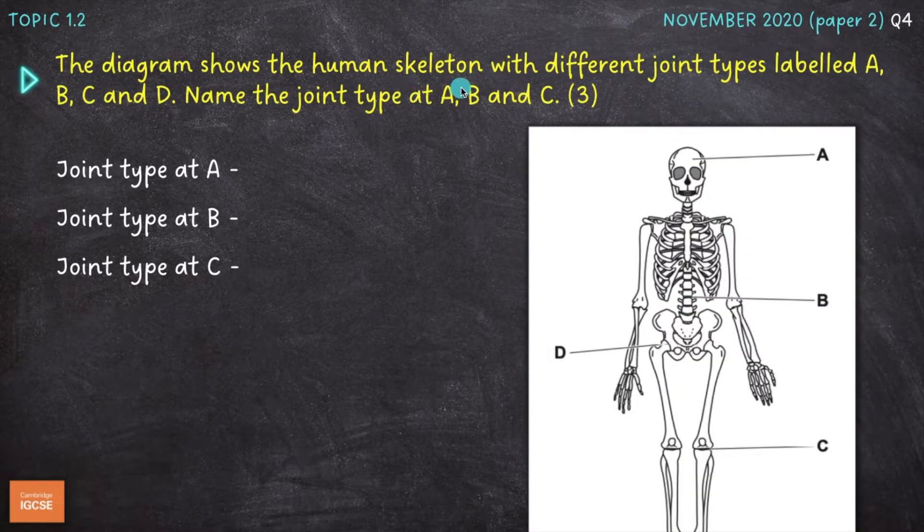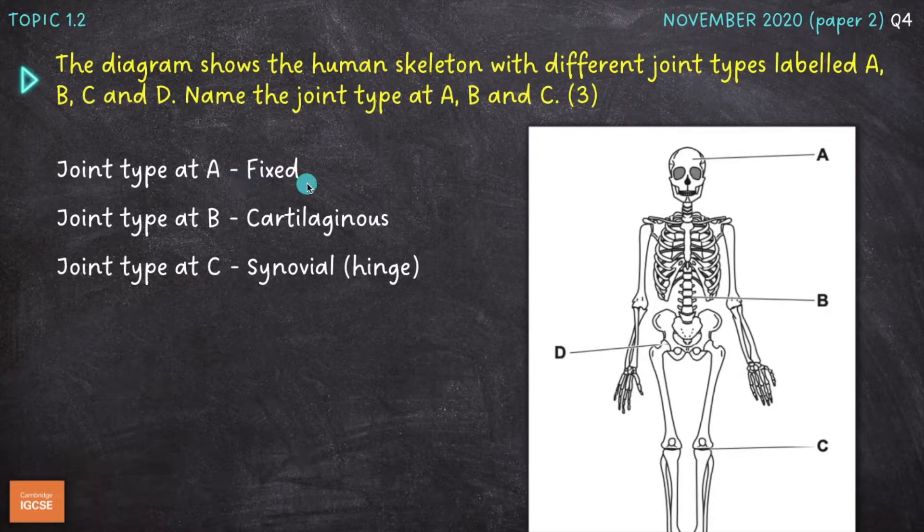Next question. The diagram shows the human skeleton with different joint types labelled A, B, C and D. Name the joint type at A, B and C for three marks. So which types of joints can we find at A, B and C? A indicates the cranium, which is composed of several flat plate-like bones, which are fused together to form fixed, immovable or fibrous joints in the cranium there. Joint B is cartilaginous. So the vertebrae here that make up the spine are separated or joined together by cartilage, which allows movement or a small amount of movement in multiple directions.